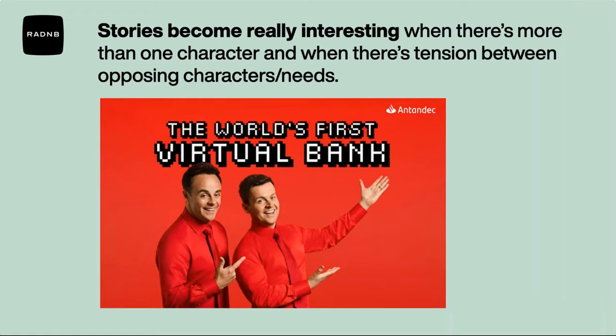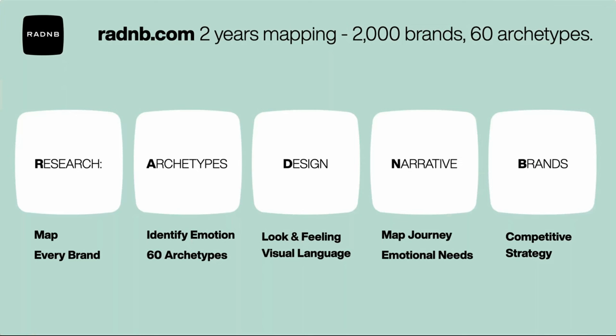Just over two years ago, with the help of people like Imperial College London, we started building Radenby to answer that very question. Radenby looks to understand archetypes, how they're expressed visually through a design language, how this is used to tell a narrative, and how that supports a brand strategy. Today we've mapped almost 2,000 brands through the lens of 60 archetypes. We wanted to map every type of brand — not just a few famous consumer brands — the good and the bad, the B2Bs, the global and the local, those whose budgets were big and those whose budgets weren't, to build a true picture of how brands really use archetypes. To our knowledge, mapping brands through the lens of 60 archetypes has never been done before.